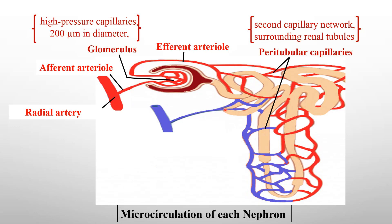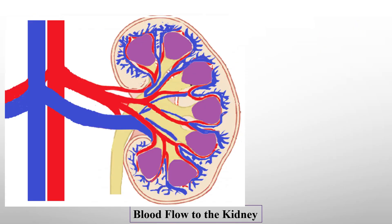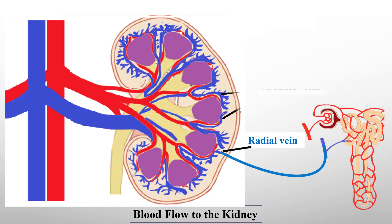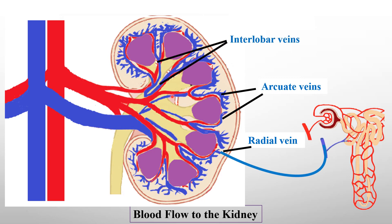The peritubular capillaries reunite to form the radial veins. The radial veins join together to form the arcuate veins, which run parallel to the surface between the cortex and medulla. The arcuate veins join to form the interlobar veins that pass down between the pyramids, and finally all the interlobar veins join together to form the renal vein. The renal veins from both kidneys enter the vena cava, which takes blood away from the kidney.